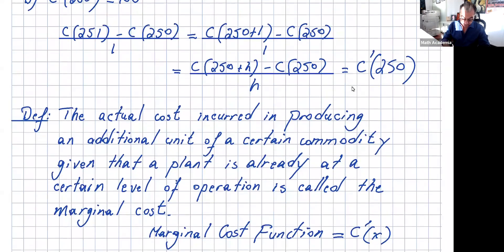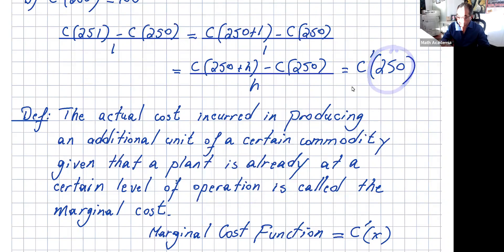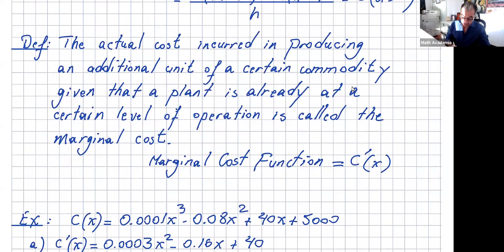The actual cost incurred in producing an additional unit of a commodity, given that the plant is already at a certain level of operation, is called the marginal cost. The plant is already making 250 units and we want to know the cost from item 250 to the 251st item. The best way to remember: just take the derivative. If you hear 'marginal cost function,' that means the derivative of the cost function.